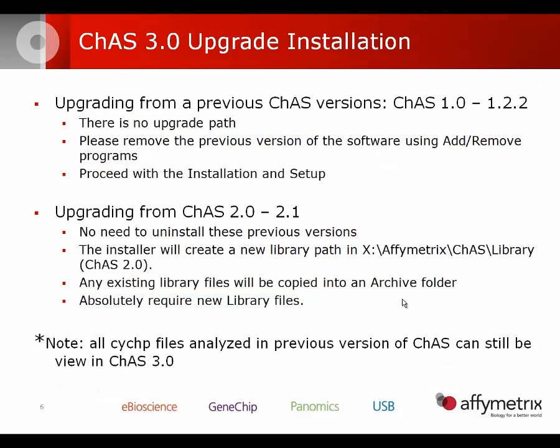When upgrading from previous versions: if you have CHAS 1.0, 1.1, or 1.2 through 1.2.2, there is no upgrade path — please remove all previous versions using Add/Remove Programs before proceeding. Upgrading from CHAS 2.0 or 2.1 is supported; you do not need to uninstall it through Add/Remove Programs. Simply run the CHAS 3.0 installer.